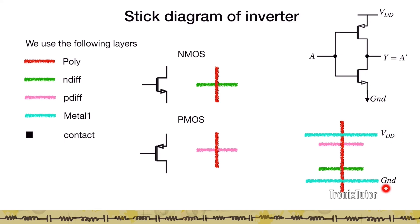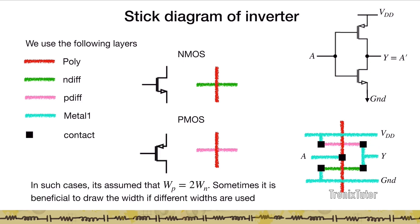We run a VDD line and a ground line. The source of the PMOS is shorted to VDD, the drain of the PMOS is shorted to the drain of the NMOS and connected to the output terminal. The source of the NMOS is connected to ground. We then create an input shorted to the poly. This completes the stick diagram of the inverter.